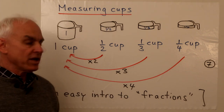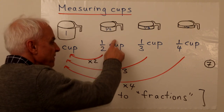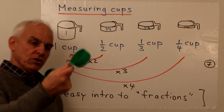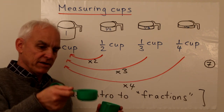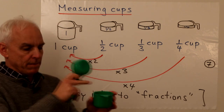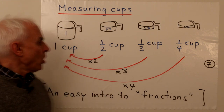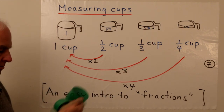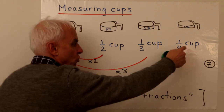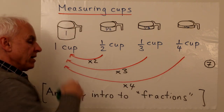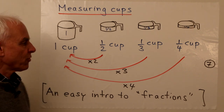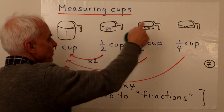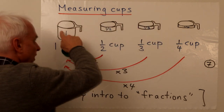All kids need to know is that two of these half-cups equal one cup — they can test it by filling this with water twice and it'll reach the top. Similarly, three of these one-third cups give you the big one, and four of these quarter-cups give you a cup. So the crucial property of these smaller subdivisions: two of these is a cup, three of these is a cup, four of these is a cup.